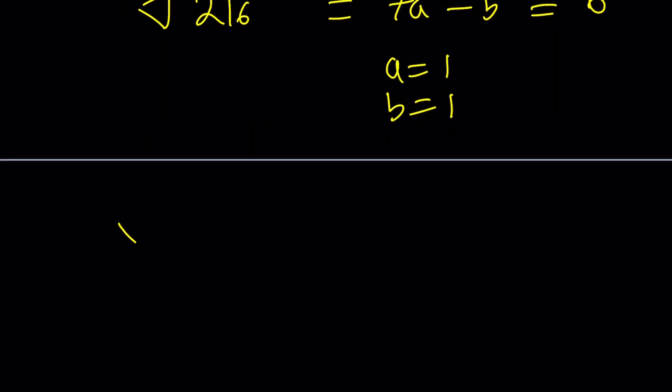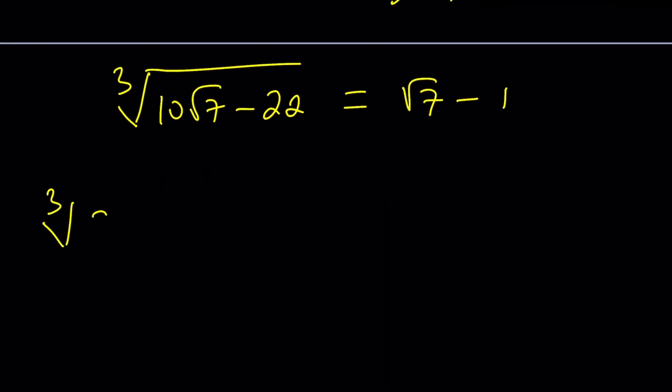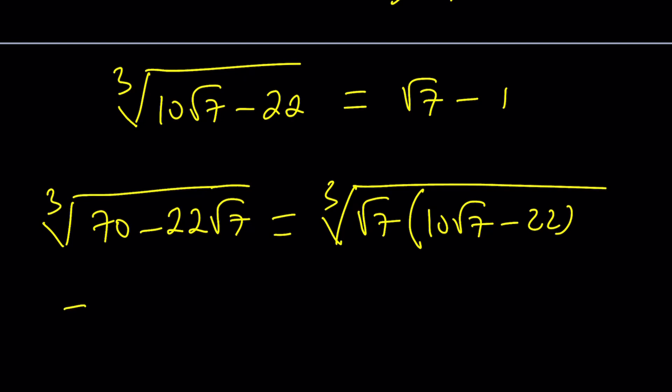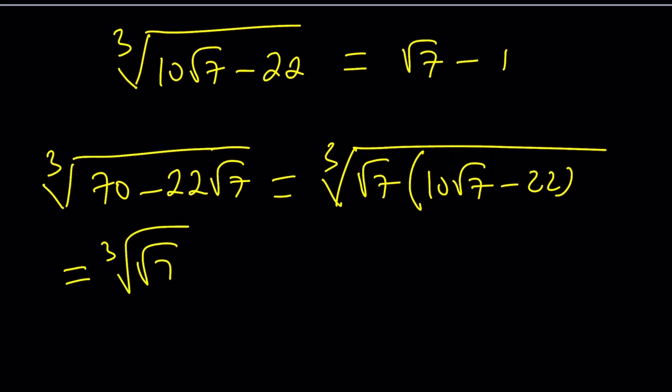So that means the cube root of 10 root 7 minus 22 can be written as root 7 minus 1. And you can check easily. Go ahead and cube both sides, and you'll get the idea. But that's not the whole story. Here's the fun part. So we just said that the cube root of 70 minus 22 root 7 can be split into the cube root of square root of 7 times 10 root 7 minus 22. And then we can go ahead and separate these.